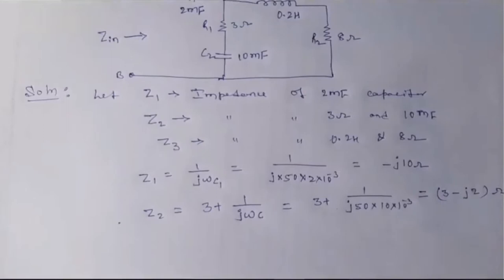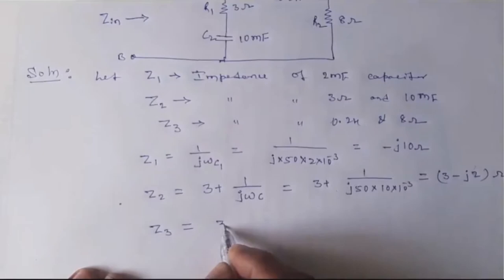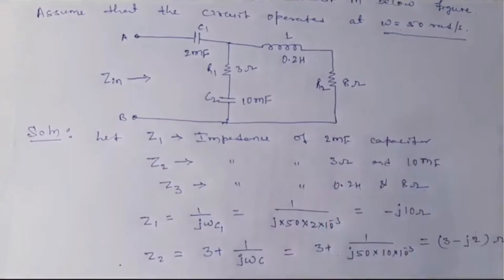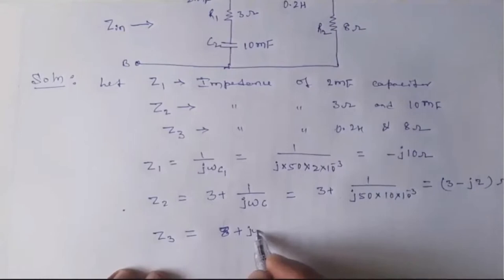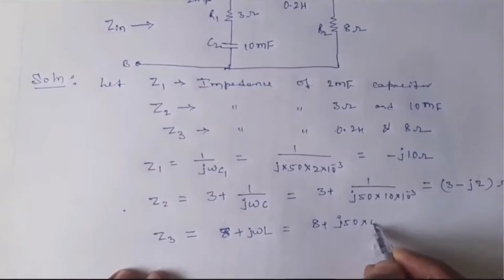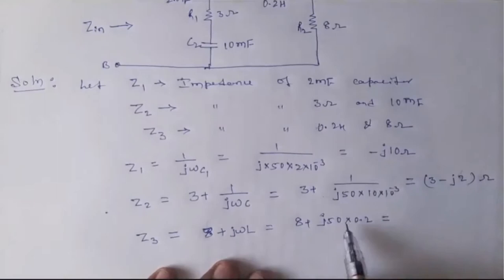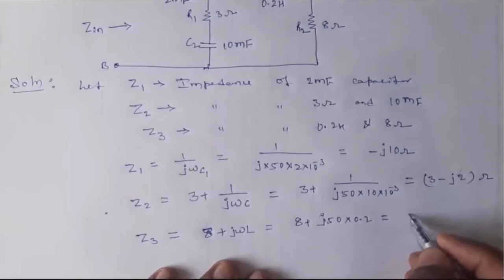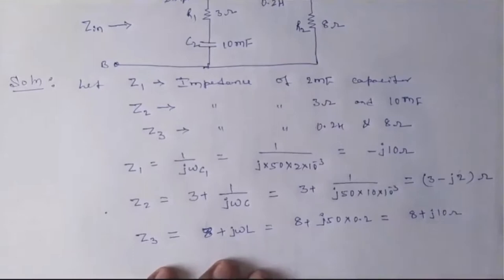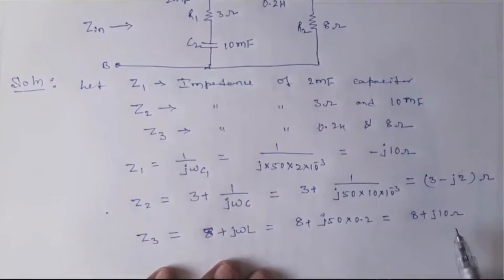Lastly, Z3 is a series combination of the inductor L and resistor R2. Z3 equals 8 plus j·ω·L, which is 8 plus j×50×0.2 henry. Calculating this gives Z3 equal to 8 plus j10 ohm.